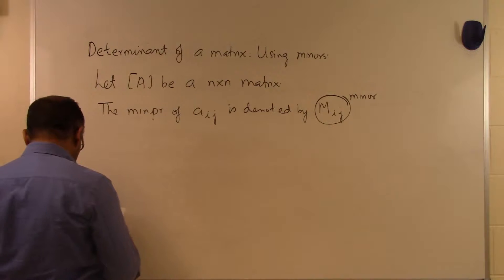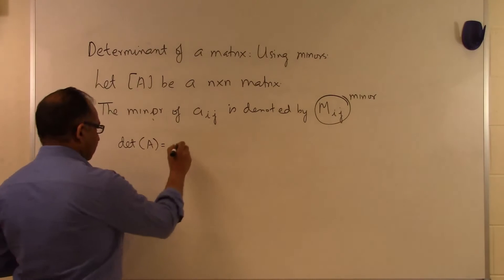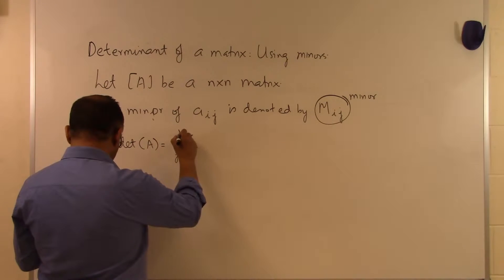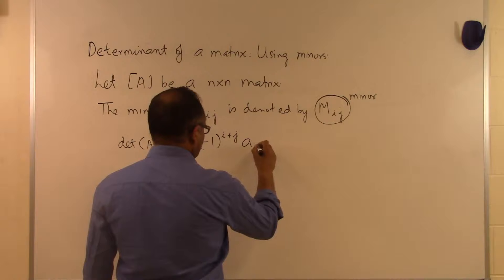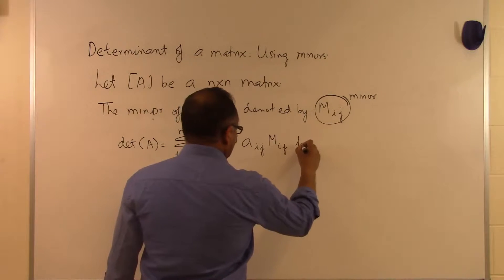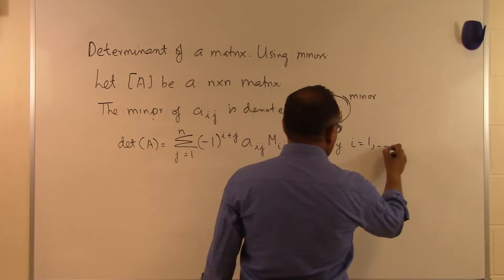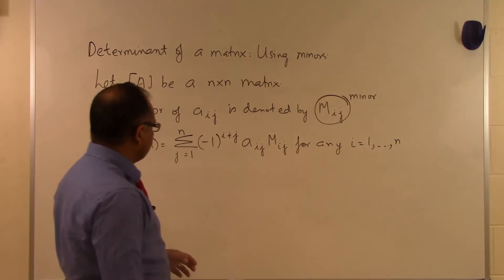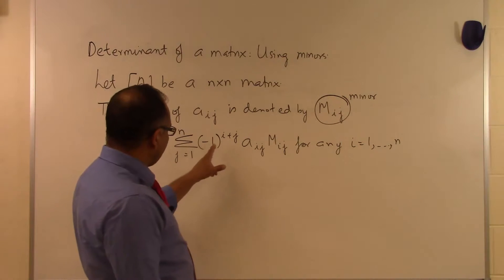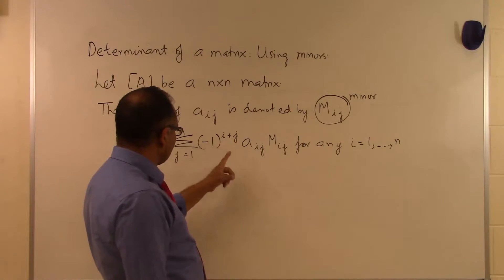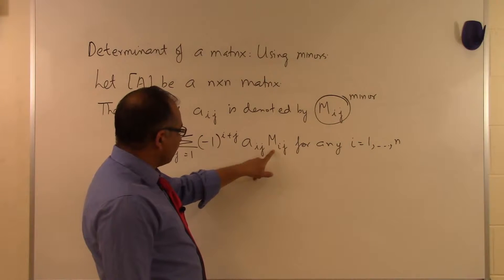We can find the determinant of A using either of these formulas. We sum over j from 1 to n of (-1)^(i+j) times A_ij times M_ij, for any fixed row i from 1 to n. The factor (-1)^(i+j) is simply +1 or -1 depending on whether i+j is even or odd. Then we take the element of A and multiply it by its minor.